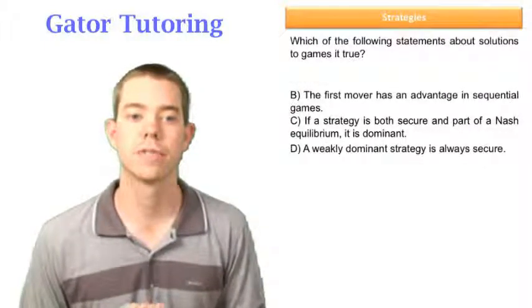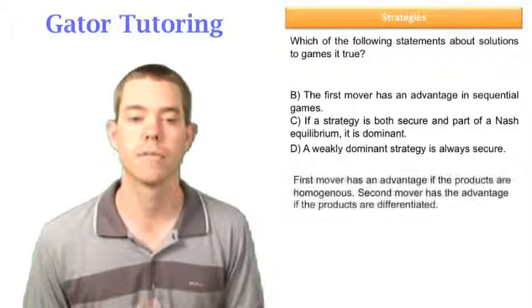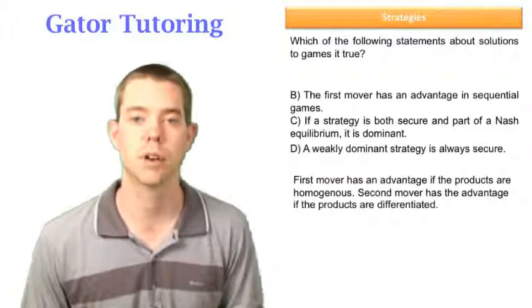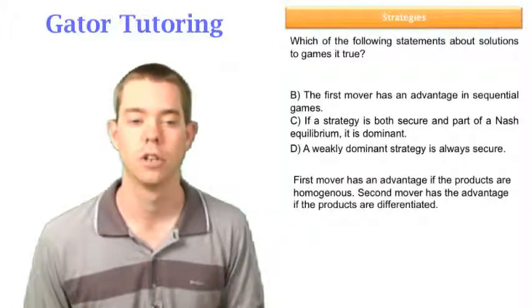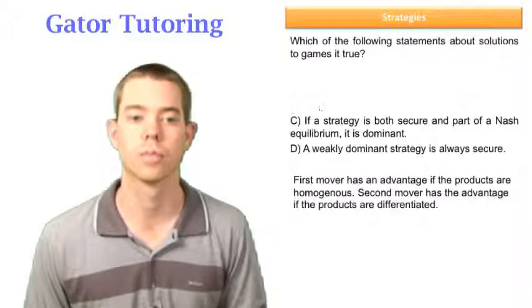Option B says the first mover has an advantage in sequential games. A first mover has an advantage if products are homogenous, but a second mover actually has the advantage if products are differentiated. So B is not true — we can get rid of B.